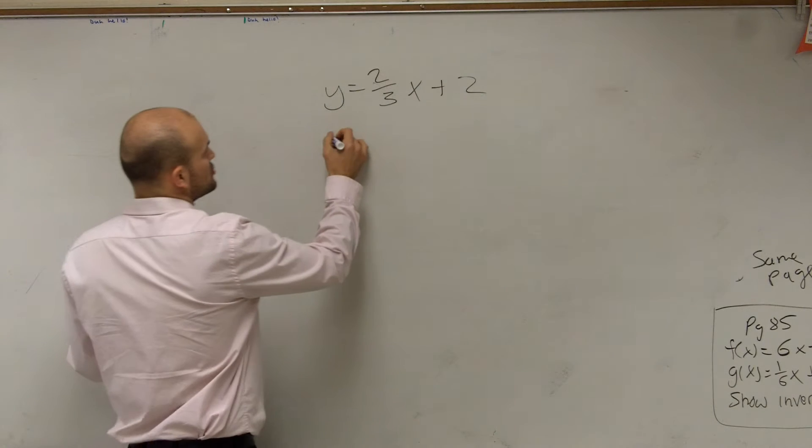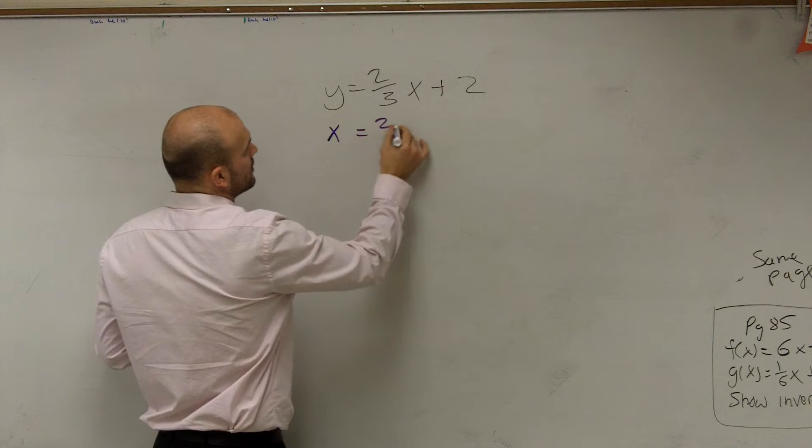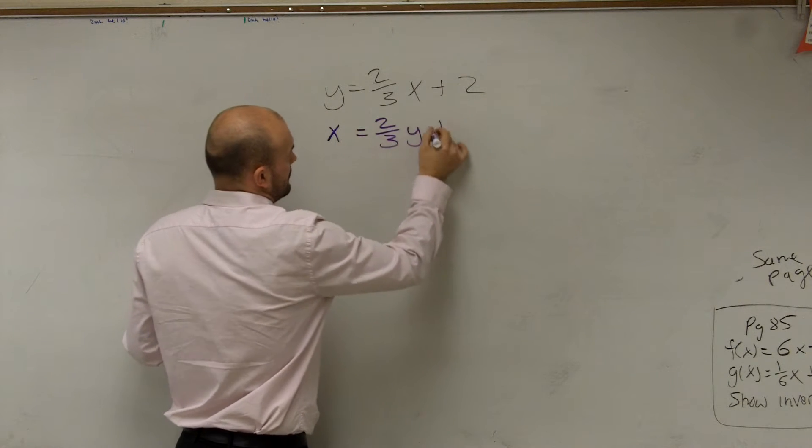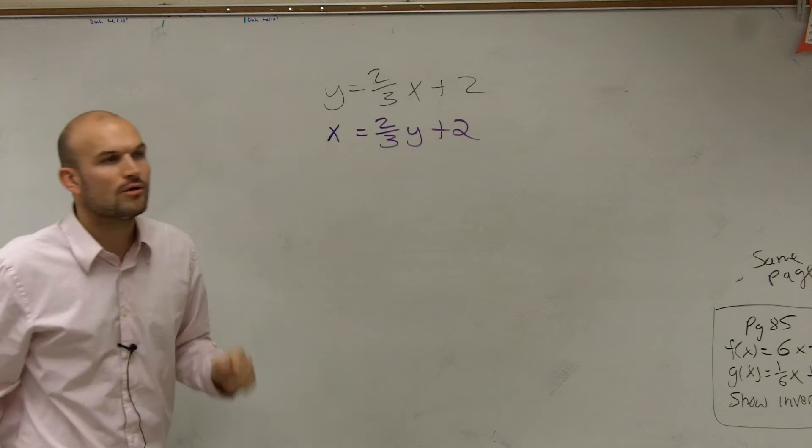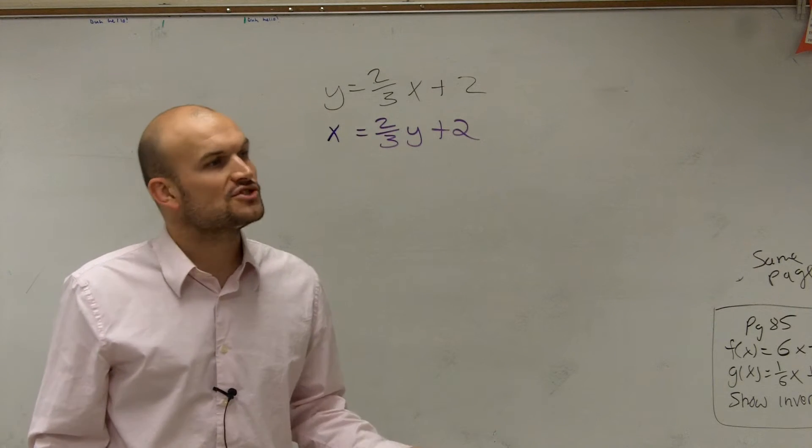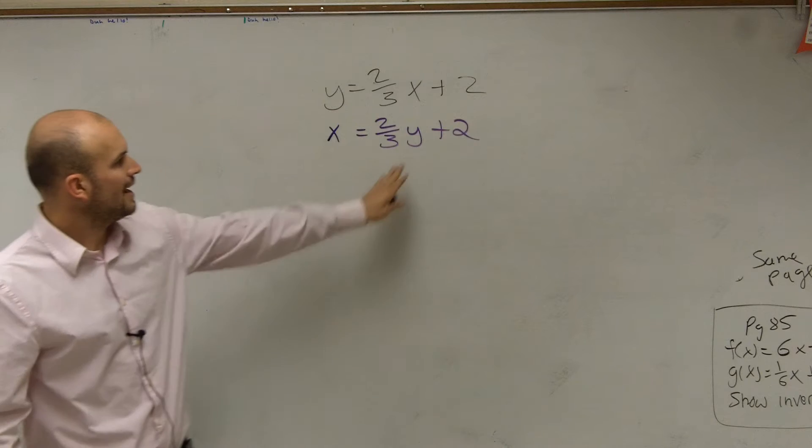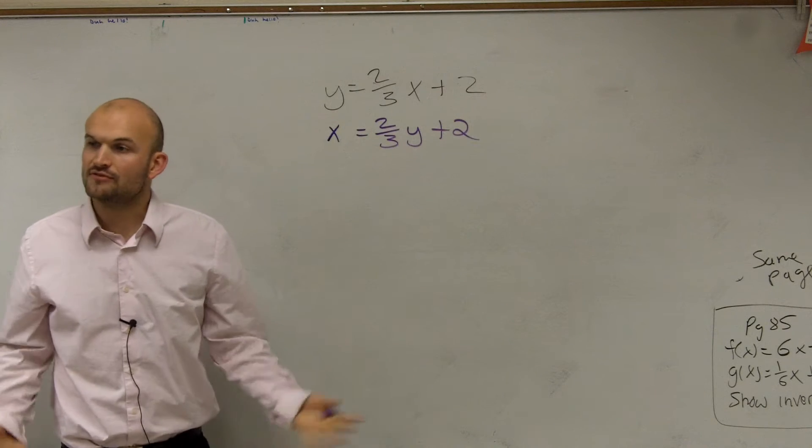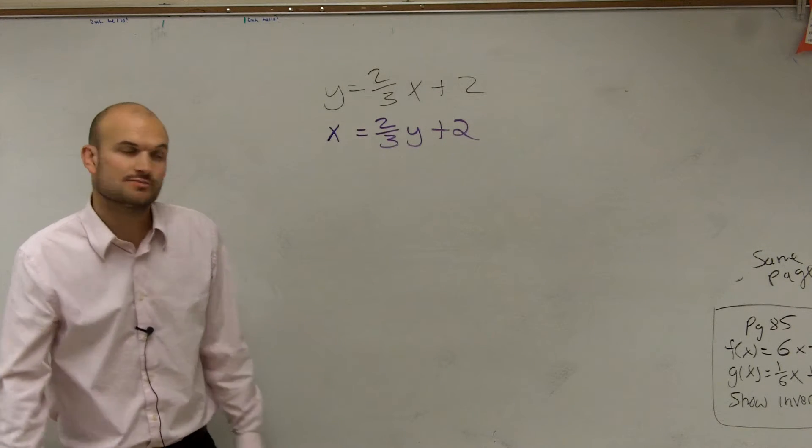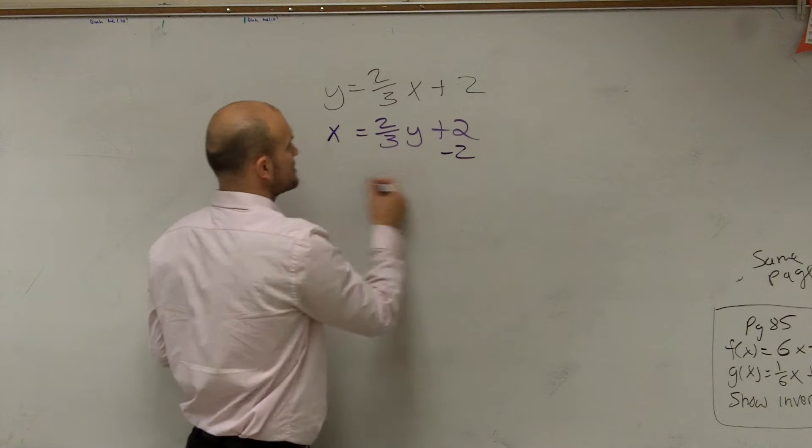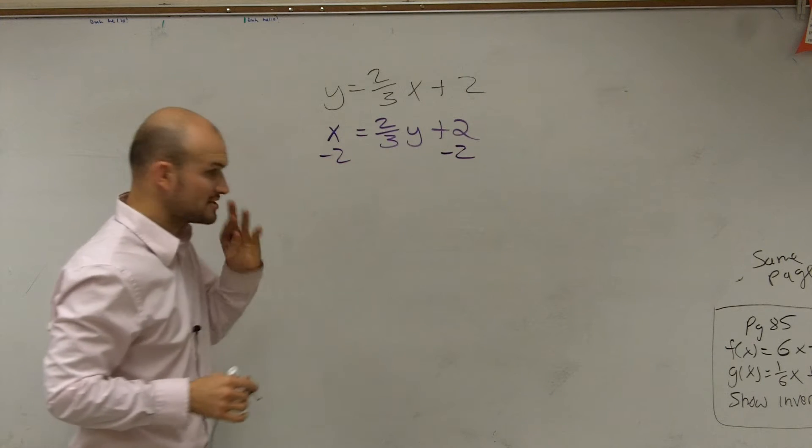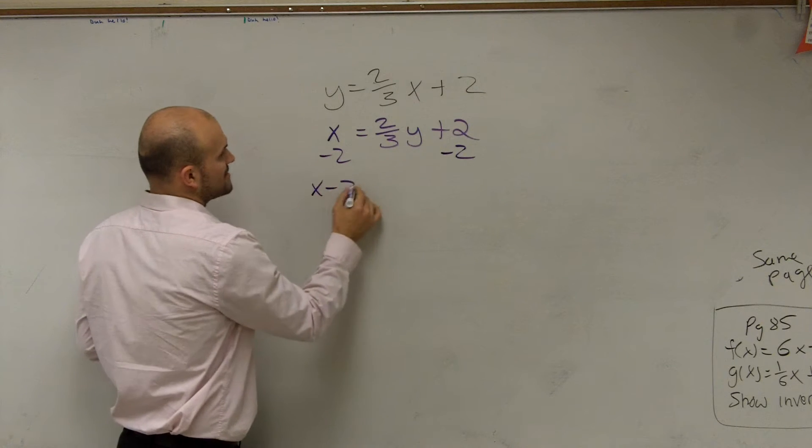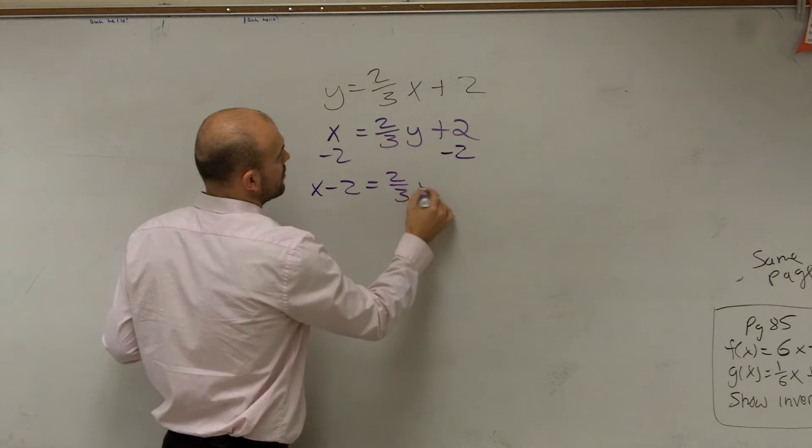So that's step number two, Ricardo, is you swap your x and your y coordinates. Then what we're going to do is now solve for y. So I need to isolate my y variable. The first thing I do is I undo addition and subtraction by using the subtraction property of equality. So I have x minus 2 equals 2/3 y.